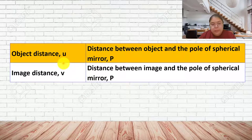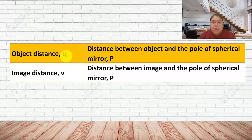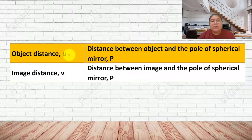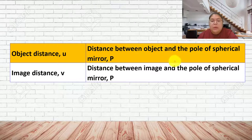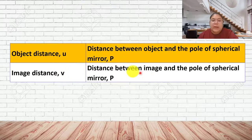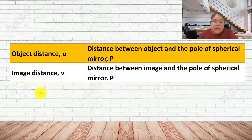Two more labels we need to know for drawing: object distance is small u - the distance between the object and P, the center of the mirror. Image distance is small v - the distance between the image and the mirror. Remember the mirror center separates the object on one side and the image on the other side.